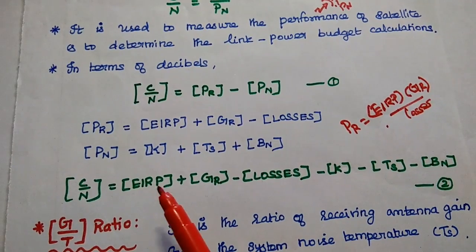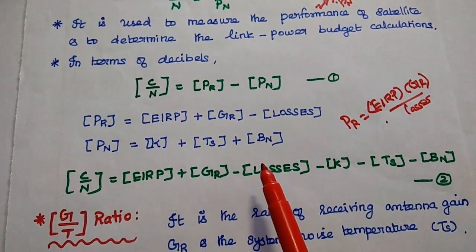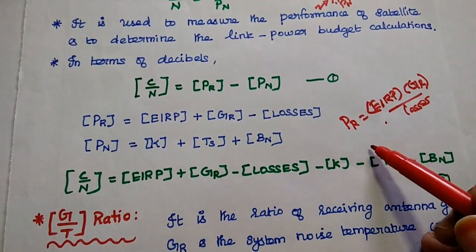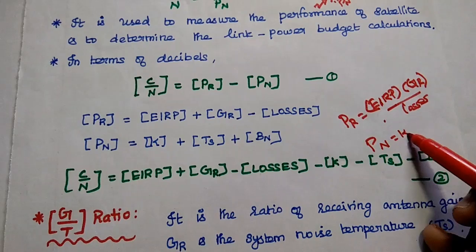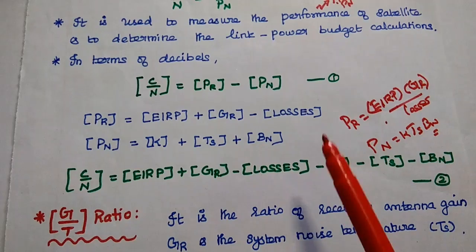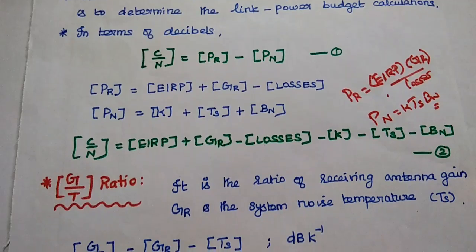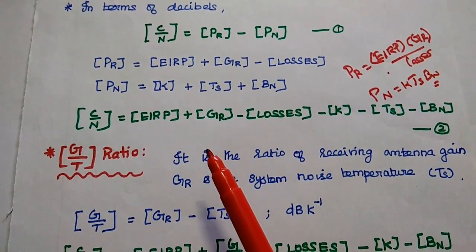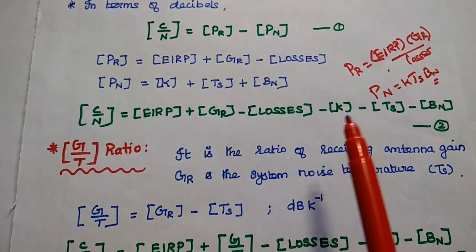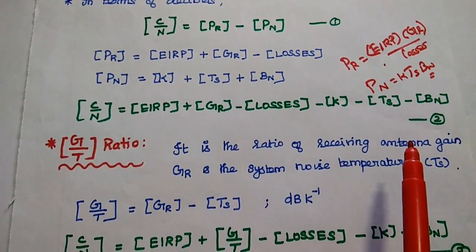The noise power mainly depends on the system temperature and also the noise bandwidth. Here K is the Boltzmann constant. In normal terms, we can represent the noise power as PN = K × TS × BN. Next, we are going to substitute these two values into the first equation. Then we can get the carrier to noise power ratio equal to: PR can be replaced with EIRP plus GR minus losses, minus this noise power. This is the second equation.